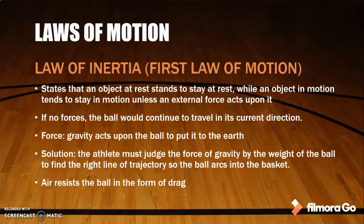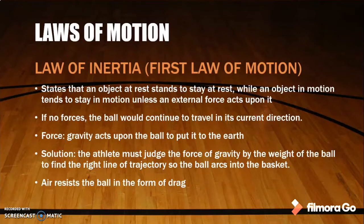How do the laws of motion apply to basketball? The law of inertia, which is the first law of motion, states that an object at rest tends to stay at rest while an object in motion tends to stay in motion unless an external force acts upon it. If no forces act, the ball will continue to travel in its current direction. For example, the force in basketball is gravity, which acts upon the ball to pull it down to the earth. The athlete must judge the force of gravity by the weight of the ball to find the right trajectory so the ball enters the basket. Air also resists the ball in the form of drag.